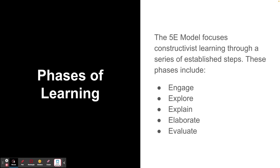In the 5E model of instruction there are several phases: engaging the learner, allowing the learner to explore the topic on their own, the teacher explaining the topic, having the students elaborate on the topic on their own, and some type of assessment or evaluation — oftentimes using a rubric or some type of submission.